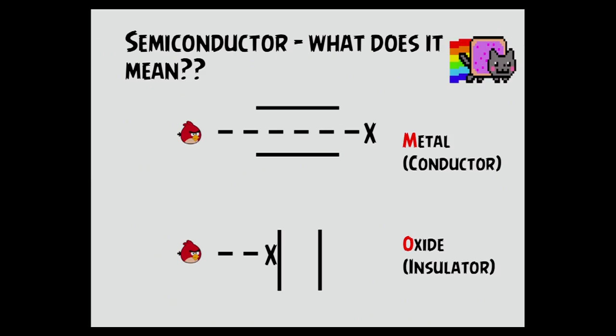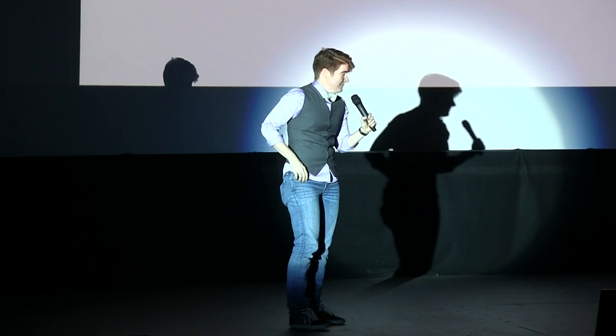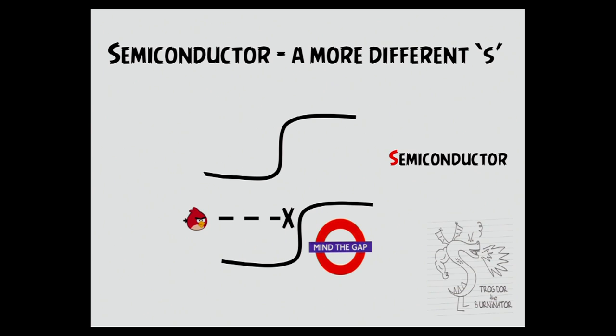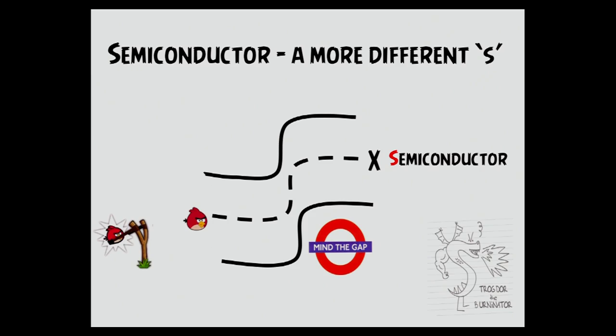So to get started, I thought maybe I would talk about what a semiconductor actually is. A conductor is something that will pass a bird at any energy level. An insulator — that bird, no matter how hard it tries, is not going to get through there. It just gets stopped. Now a semiconductor is a more different S. It will let the bird pass sometimes. This poor little bird didn't have enough energy to get over the band gap of the semiconductor, which is a technical term referring to the amount of energy that a particle must possess to get through the band gap. So I pulled back my slingshot a little bit more, and this bird has enough energy to make it through the semiconductor. We've hit the right spot in the energy spectrum.